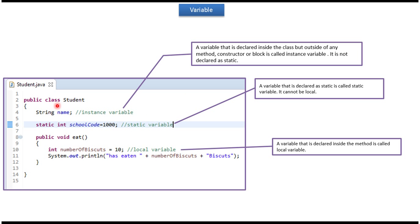Here I have declared class student and inside that I have defined a name variable. This variable is an instance variable because it is declared inside the class but outside of any method or constructor or block. And this variable is not declared as static. A variable that is declared inside the class but outside of any method, constructor or block is called instance variable, and it is not declared as static.